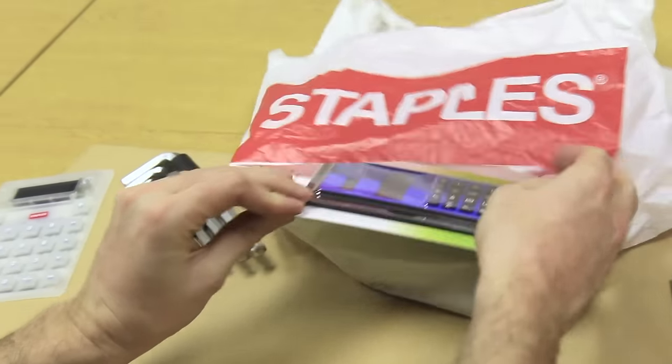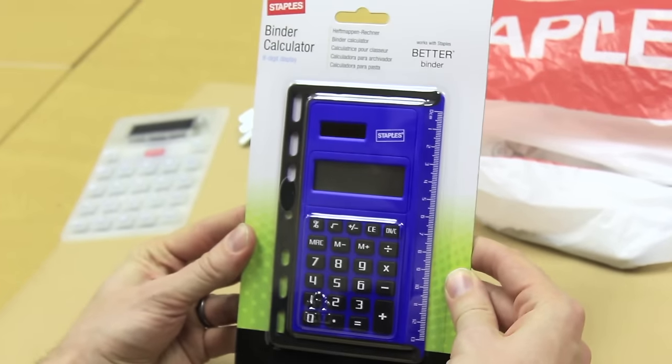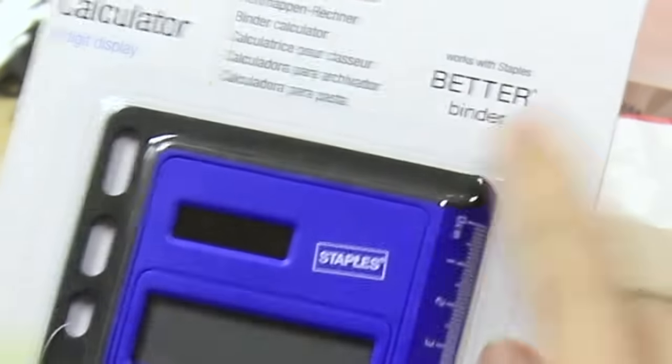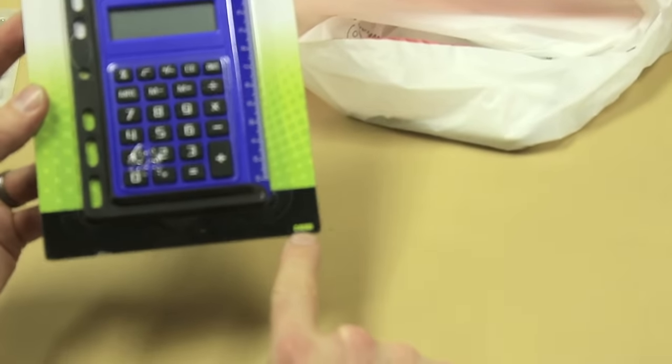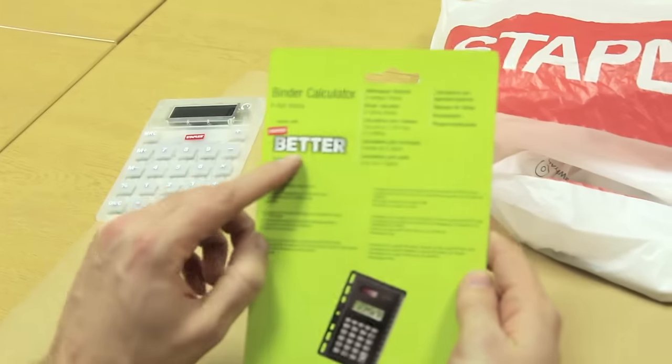Okay, up next, we have, oh thankfully, something to unbox, a binder calculator. Wow, as you can see, anything is better with a binder. It's got a number in the corner. In case you're stuck for what number to do a calculation with, they provide you with an example number on the front, that's very nice of them. And on the back, they remind you, it is, it's so better,